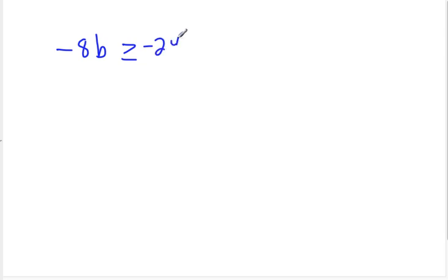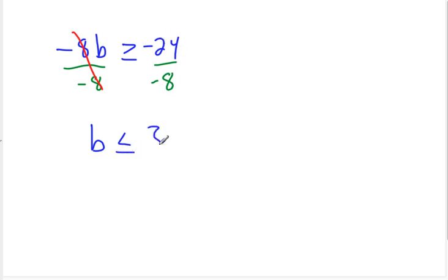Let's do negative 8b is greater than or equal to negative 24. To solve this, I'm going to divide both sides by negative 8. We are dividing by a negative number, so the sign will change direction. Negative divided by negative is positive, so b is less than or equal to positive 3 — remembering to change the sign.